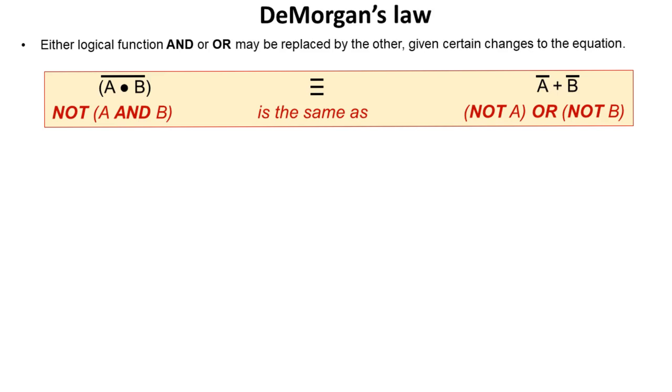So, DeMorgan's Law essentially allows us to replace either a logical function of an AND or an OR, given certain changes to an equation. In essence, it's saying that NOT (A and B) is exactly the same or equivalent as (NOT A) or (NOT B).